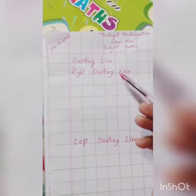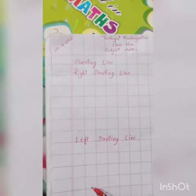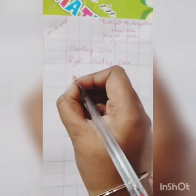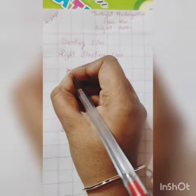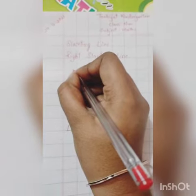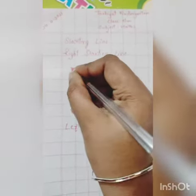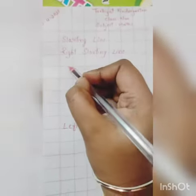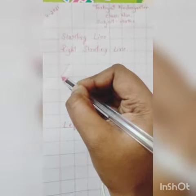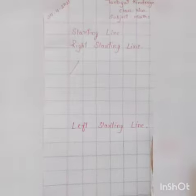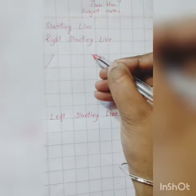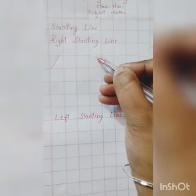Right slanting line. We will start from the top of the column and then bring your pencil down like this, then towards right. Okay, one more time — from the top of the column.